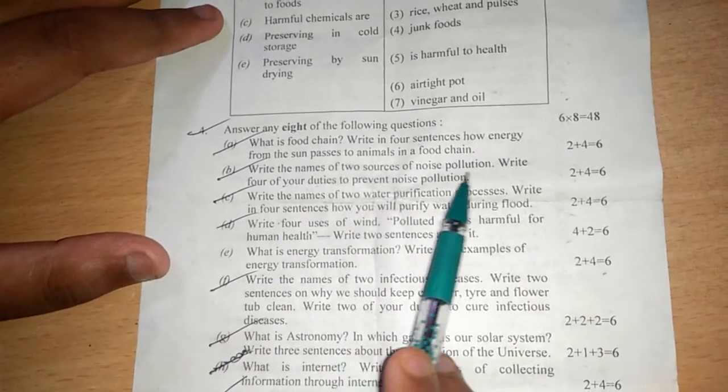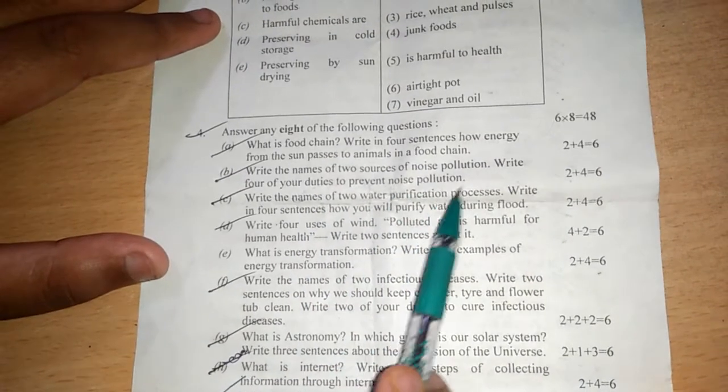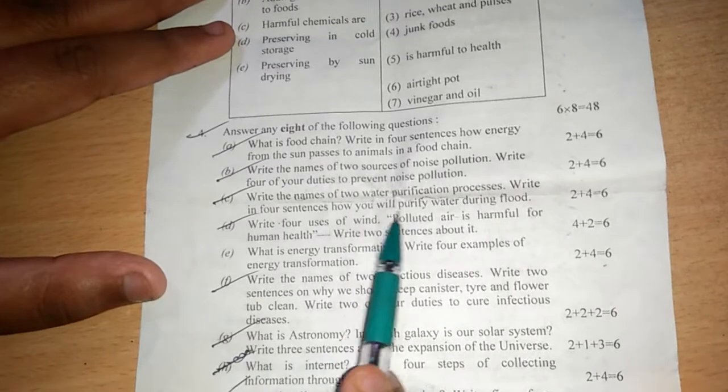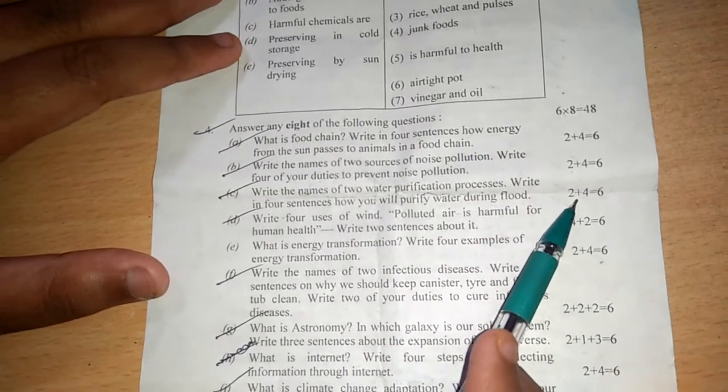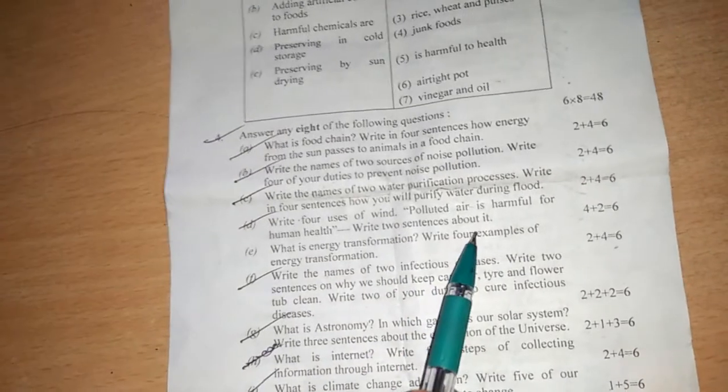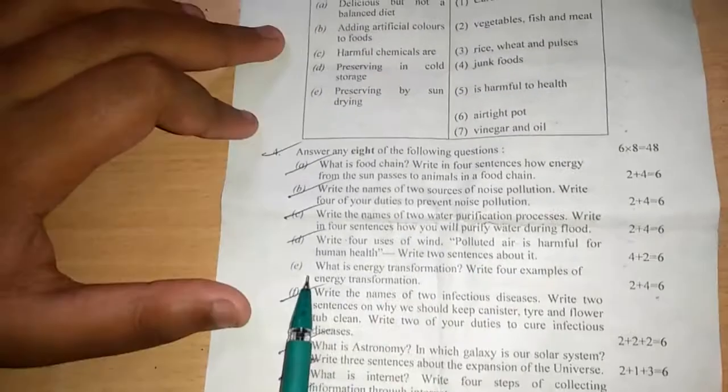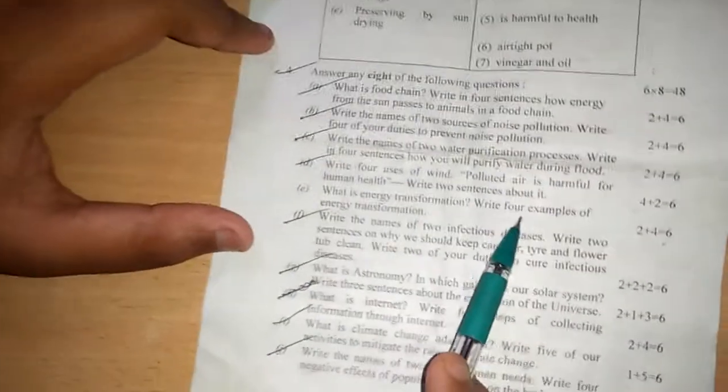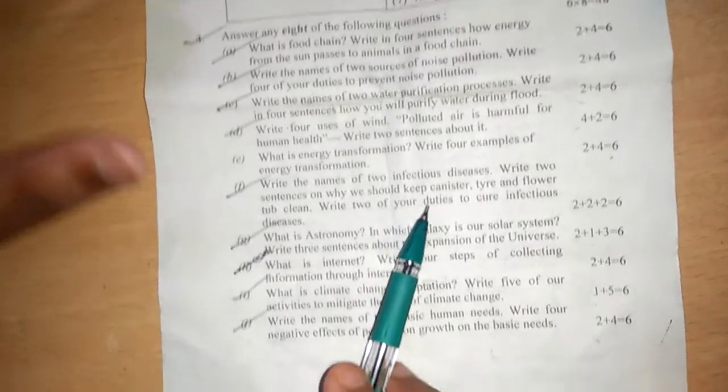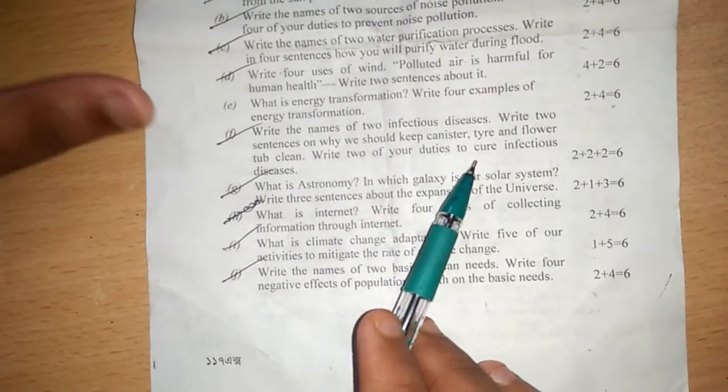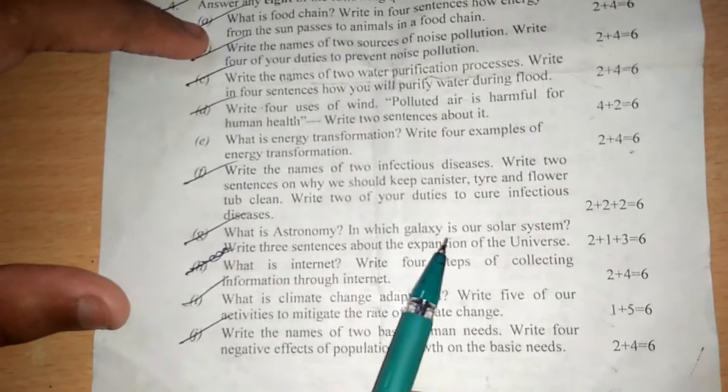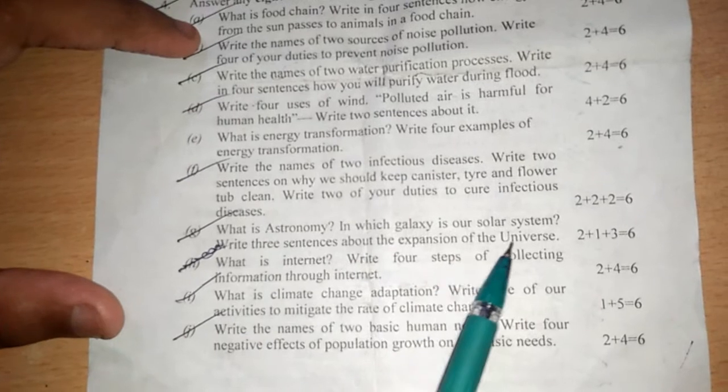Now number A question is what is food chain? Write in four sentences how energy from the sun passes to animals in a food chain. This contains two plus four equals six. Number B, write the names of two sources of noise pollution. Write four of your duties to prevent noise pollution. This also contains two plus four. Number C is write the names of two water purification processes. Write in four sentences how you will purify water during flood. It also contains two plus four. And number D, write four uses of wind. Polluted air is harmful for human health. Write two sentences about it. This is four plus two. Number E, what is energy transformation? Write four examples of energy transformation. Number F, write the names of two infectious diseases. Write two sentences why we should keep canister, tire and flower pot clean. Write two of your duties to cure infectious diseases. Number G, what is astronomy? In which galaxy is our solar system? Write three sentences about the expansion of the universe.